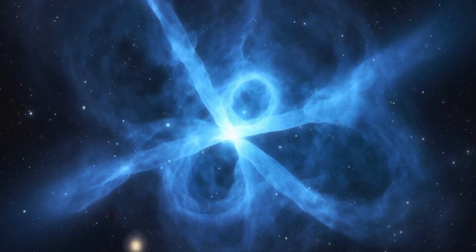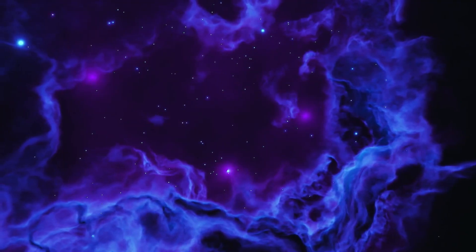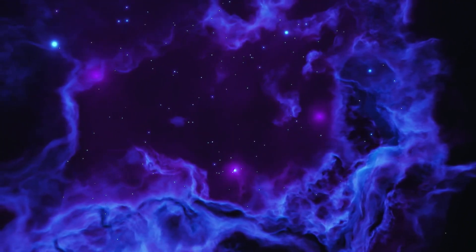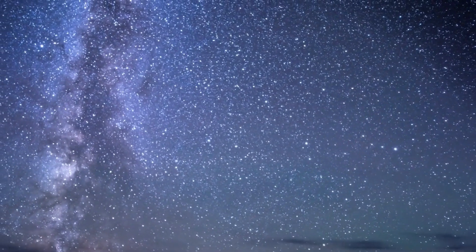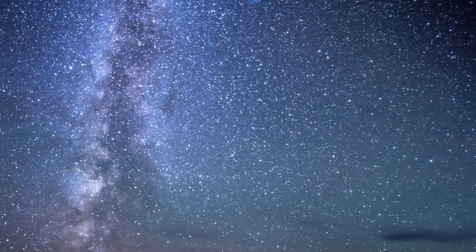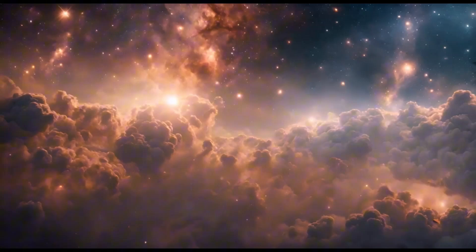Around the midpoint of the solar cycle, the sun reaches solar maximum, a period of peak activity with the highest number of sunspots, solar flares, and coronal mass ejections. The magnetic field becomes increasingly complex and tangled due to the continuous twisting and shearing from differential rotation and convection.